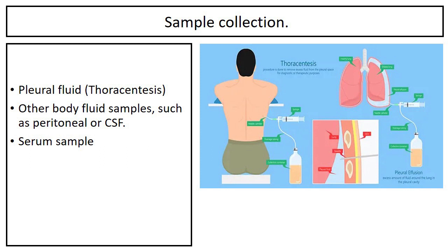A sample of pleural fluid is collected by a doctor with a syringe and needle using a procedure called thoracentesis. Rarely, other body fluid samples such as peritoneal fluid or cerebrospinal fluid are collected using procedures specific to the fluid type. Serum samples are also used to assess serum ADA levels.